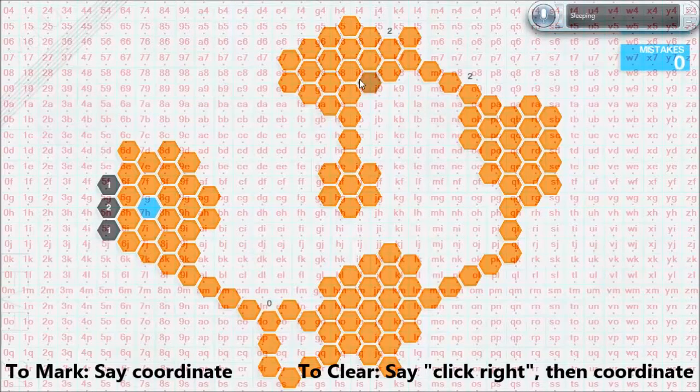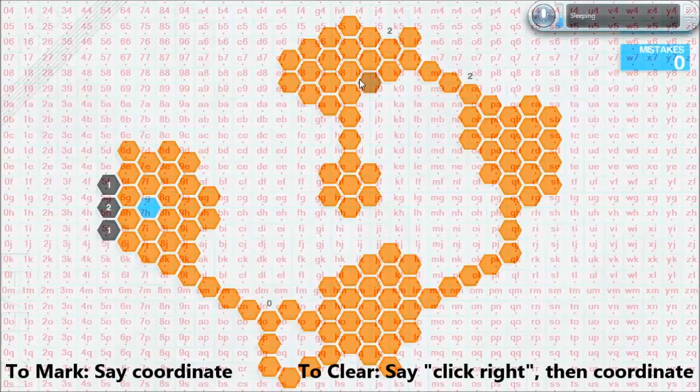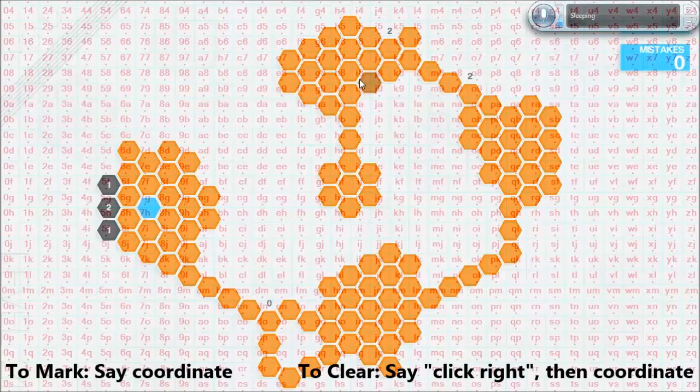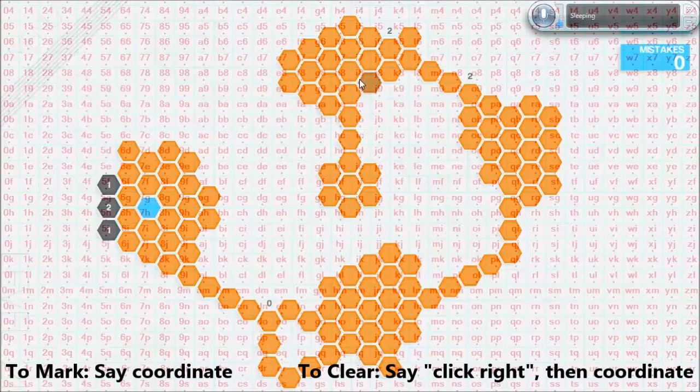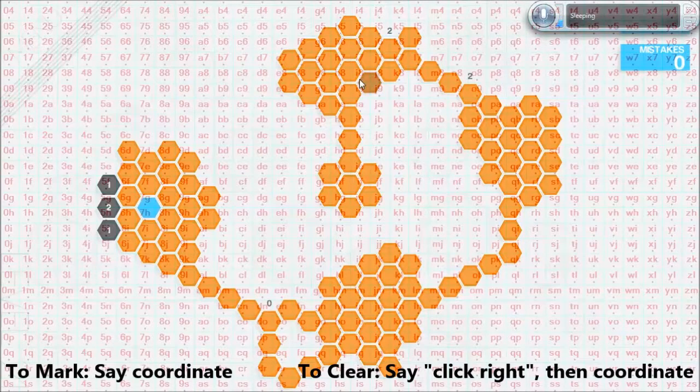But the grid can be moved by saying a compass direction multiple times. And by doing that you can line it up with particular hexagons, or even these numbers that are above the columns. When you click on them it makes a line highlighting everything in that column that you need to observe.